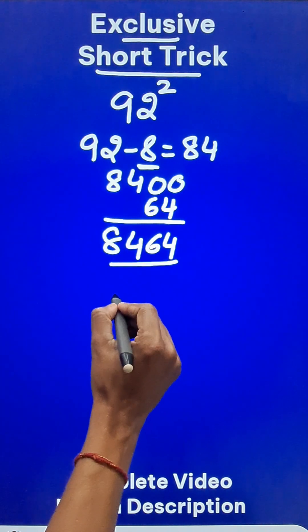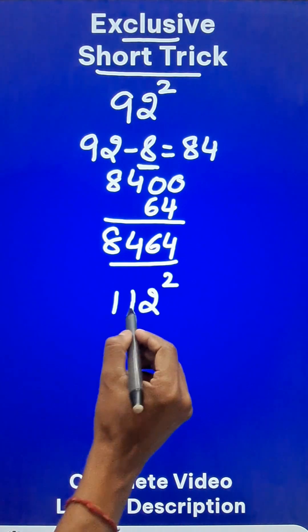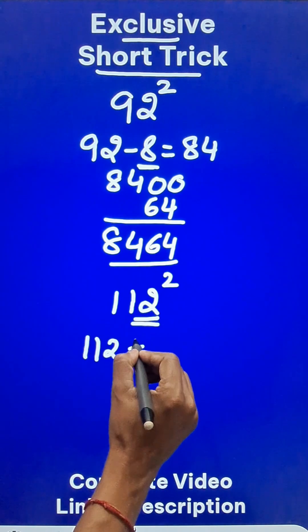Likewise, if you have to square a number which is greater than 100 like 112 squared, the excess here is 12. So this time, I am going to take up 112 and add the excess.